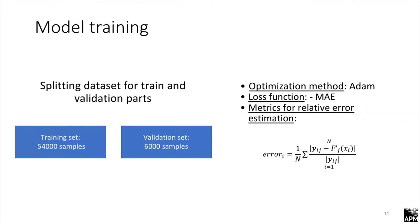For model training, the data set was split into train and validation parts. We need validation parts to be sure that the model was not overfitted on our training set. We used Adam optimization method, and for loss function we used mean absolute error. We used special metrics for relative error estimation. You can see the metric below.